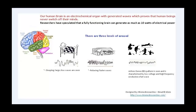Our human brain is an electrochemical organ with generated waves, which proves that human beings never switch off their minds. This is a figure of the human brain which we explained in detail in our last episode. These are the lobes of the brain: the frontal lobe, the parietal lobe, the occipital lobe, the temporal lobe, the cerebrum, the brain stem, and the spinal cord.